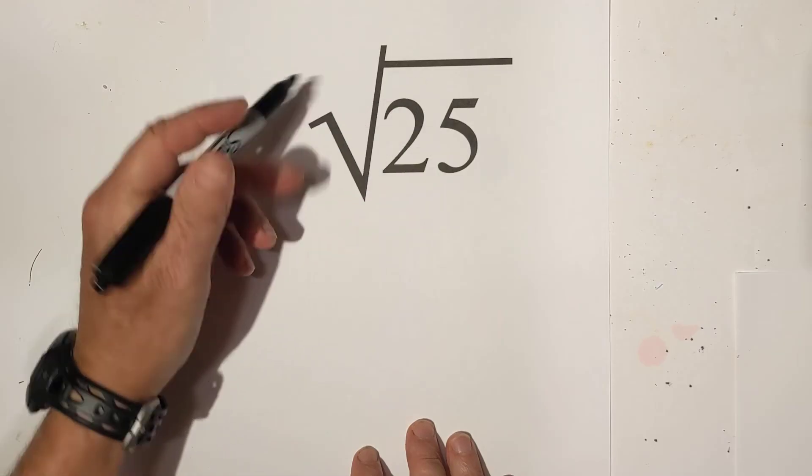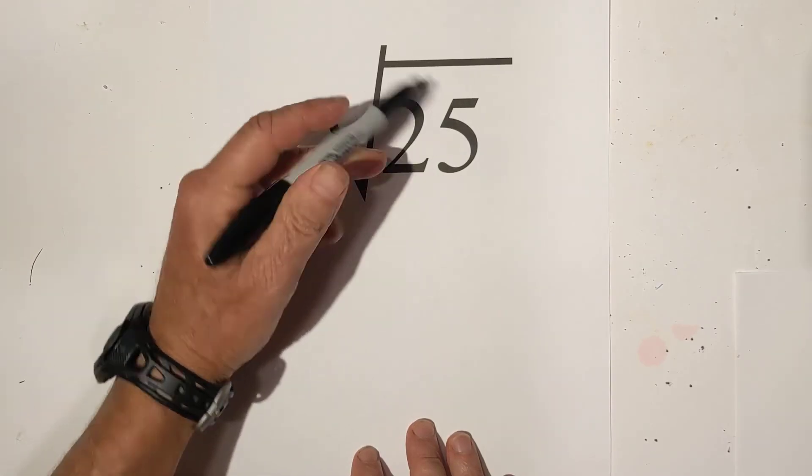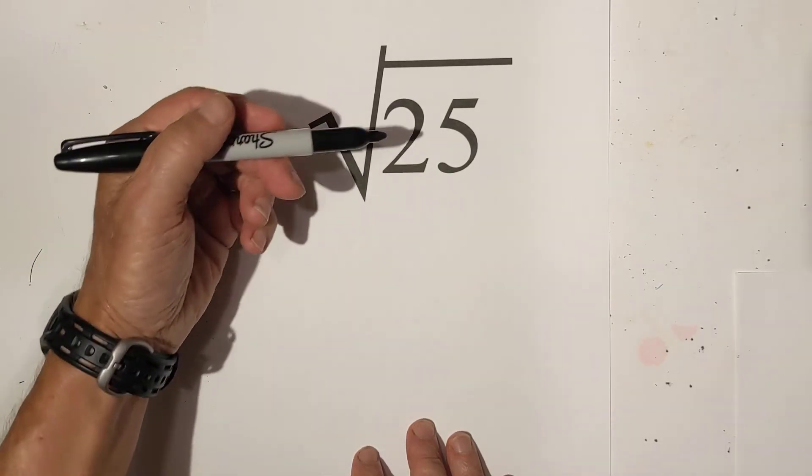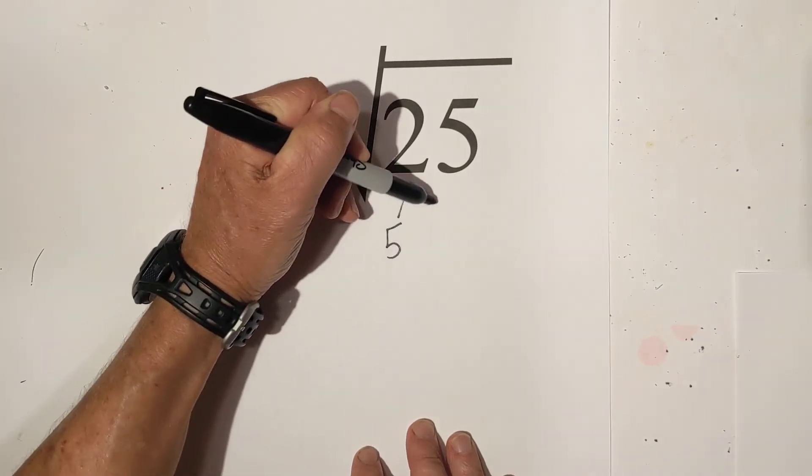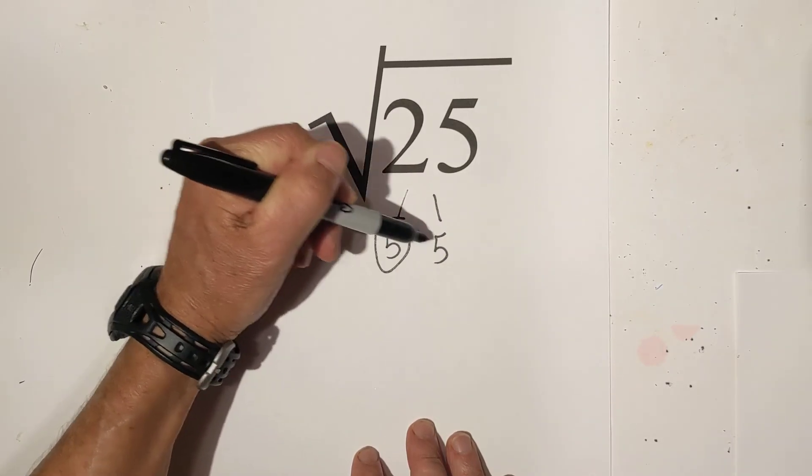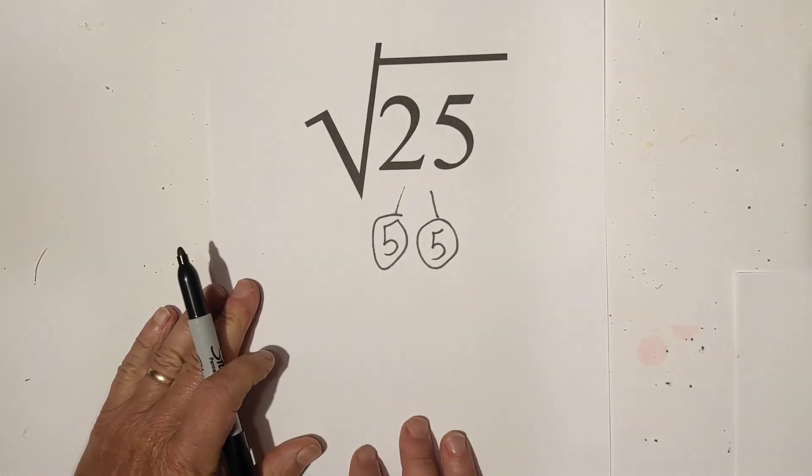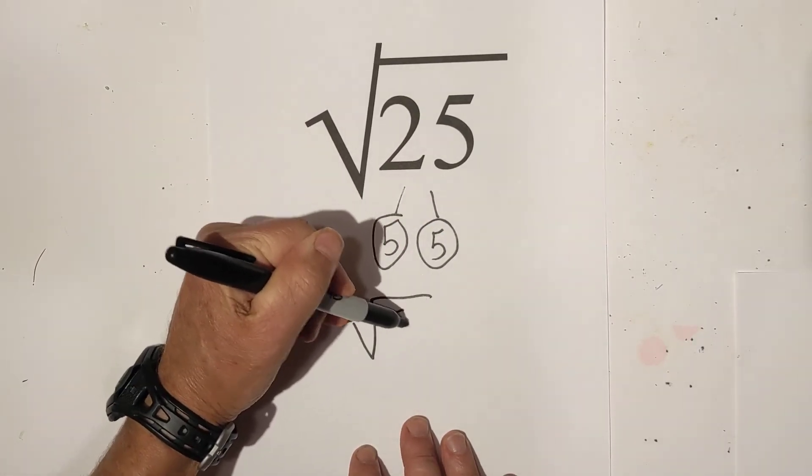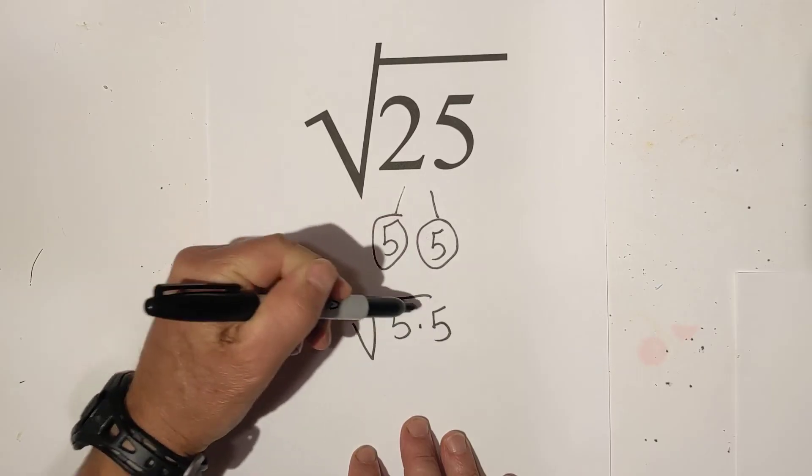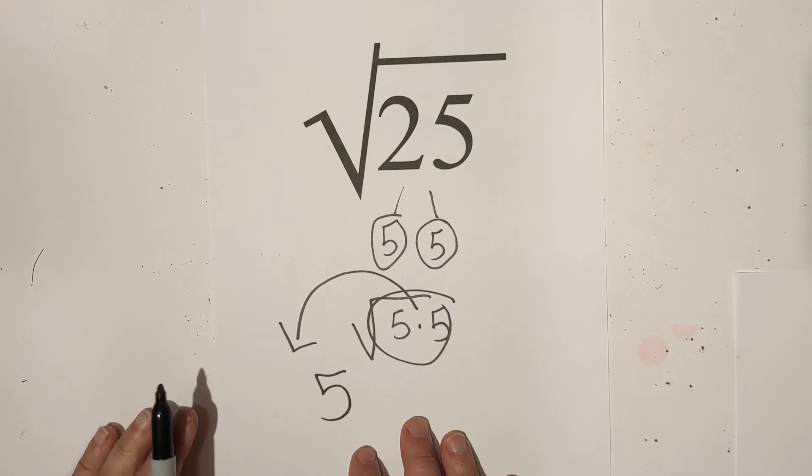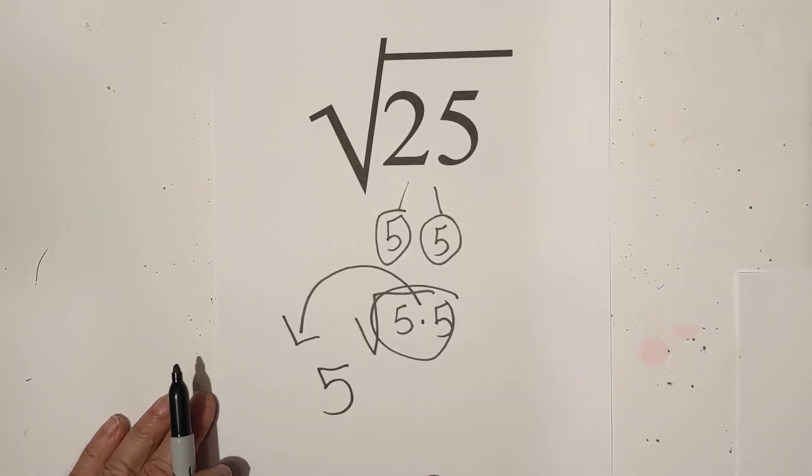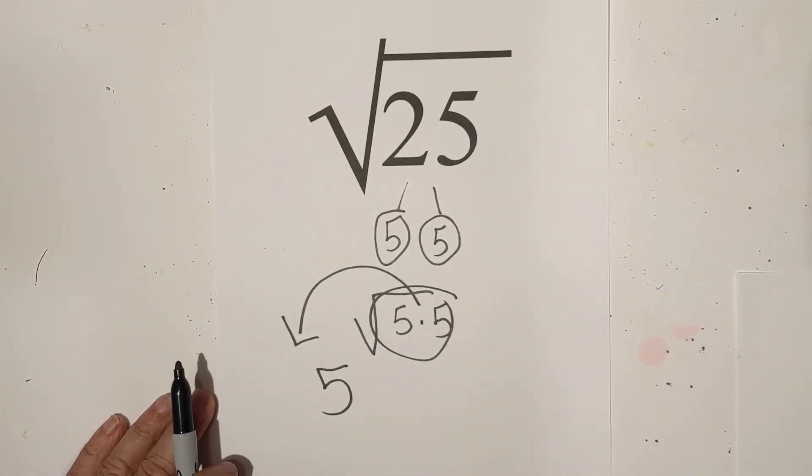Next let's go with twenty five. I know that twenty five is a perfect square. But you can still use the same technique. Five times five is twenty five. They are both prime. Rewrite them. Pull them out from underneath. And you're left with just five. And I know five times five is twenty five. So I wanted to show a perfect square.